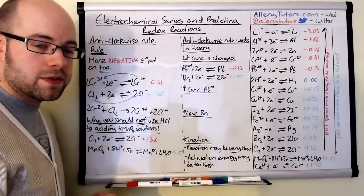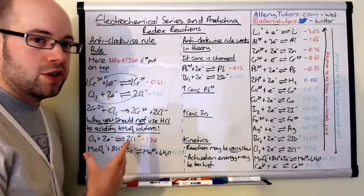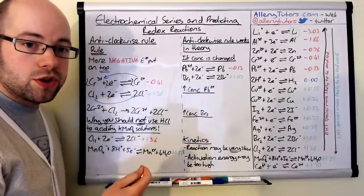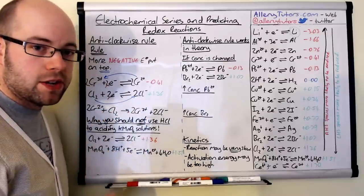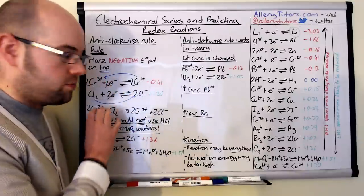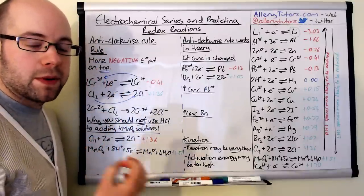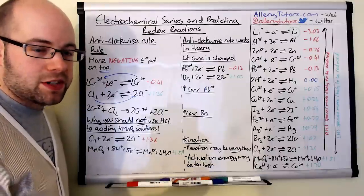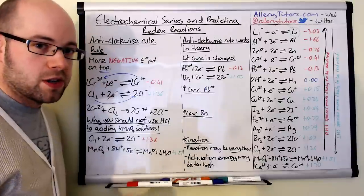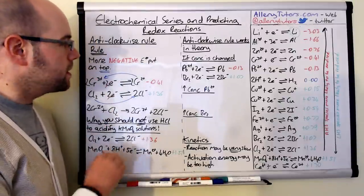That's the only feasible reaction. If the exam gives you an equation and asks if it's feasible, draw out your half equations, apply the anti-clockwise rule to find what is actually feasible, and compare that with what the examiners have given you. If it doesn't match, then the equation given is not a feasible reaction.